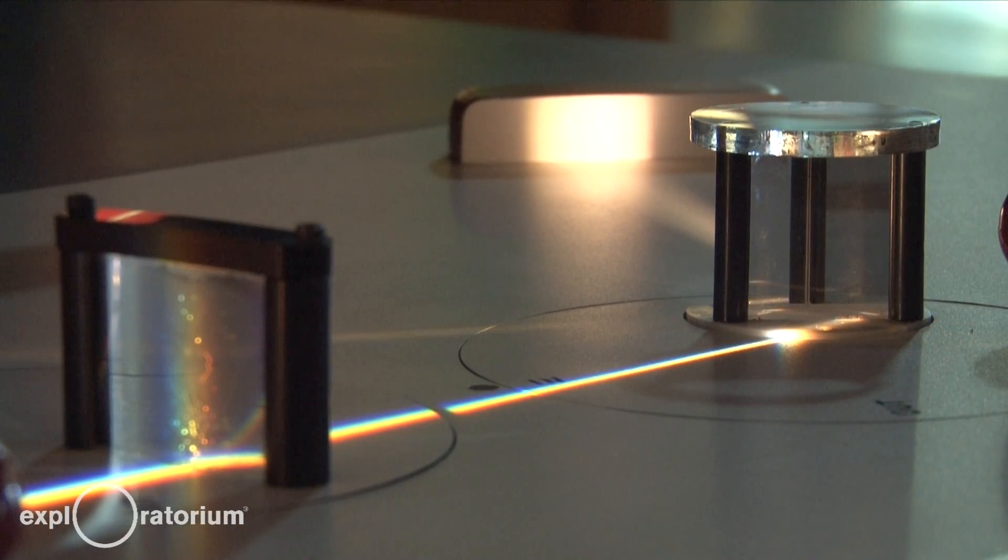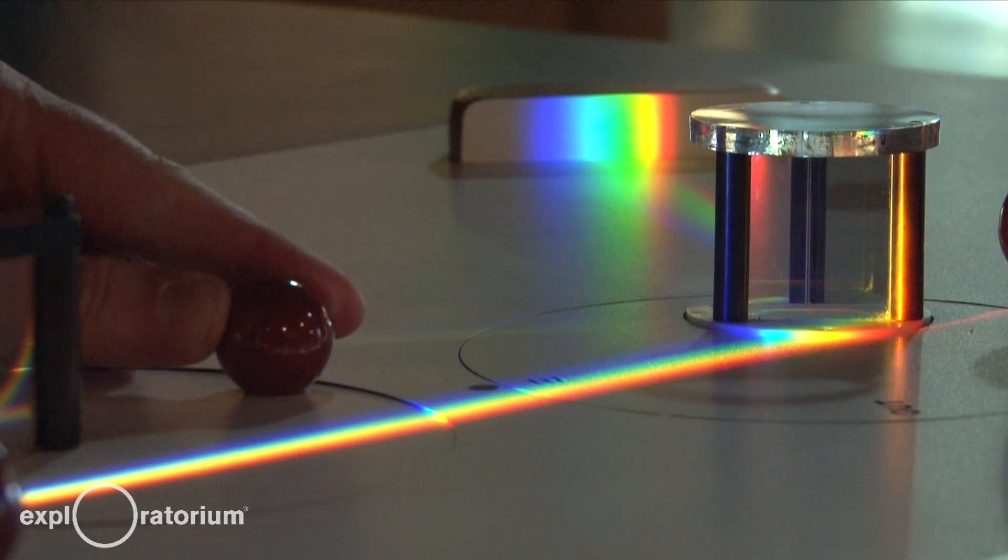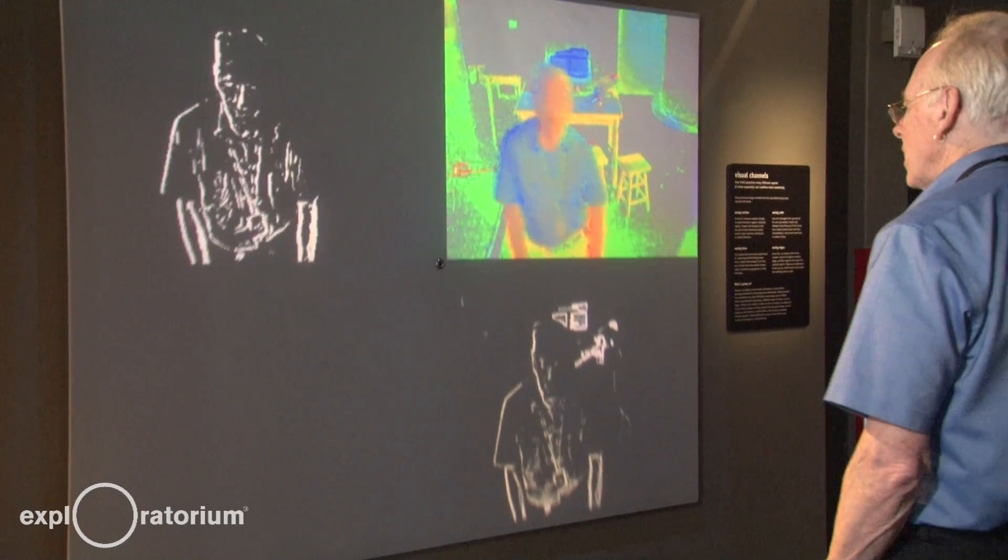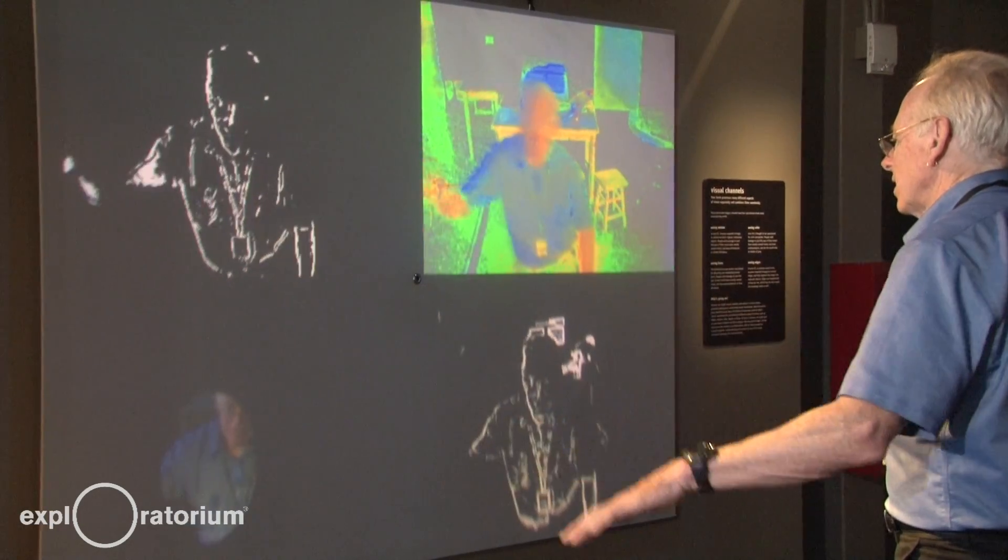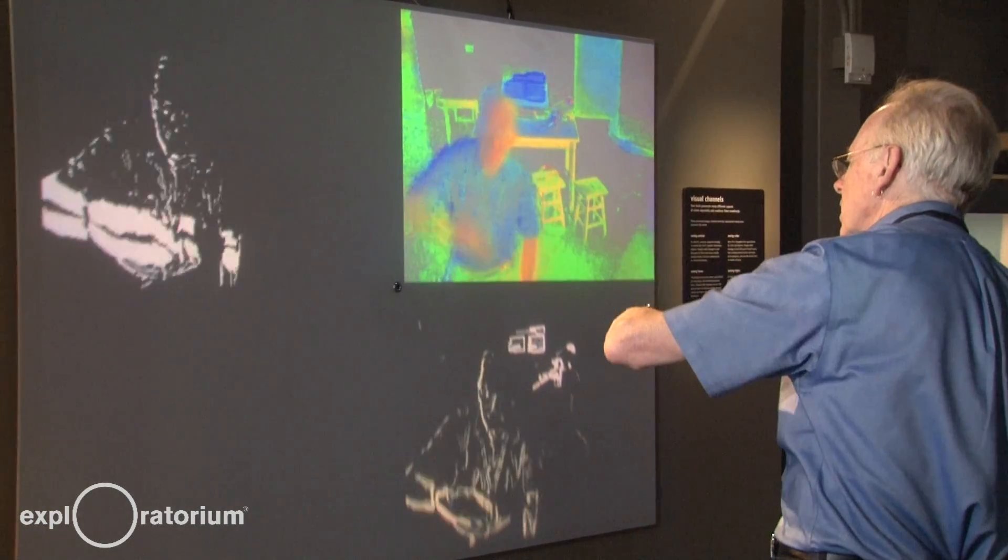People ask, is light a wave or a particle? Light is actually light. We model it sometimes as a wave and sometimes as a particle, and it serves as a great example for the whole essence of science—how scientists use models to understand phenomena around them.